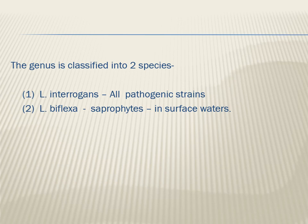The genus Leptospira is classified into two species: Leptospira interrogans and Leptospira biflexa. All interrogans are pathogenic, meaning they cause disease. Leptospira biflexa are saprophytes, so they do not cause any disease.